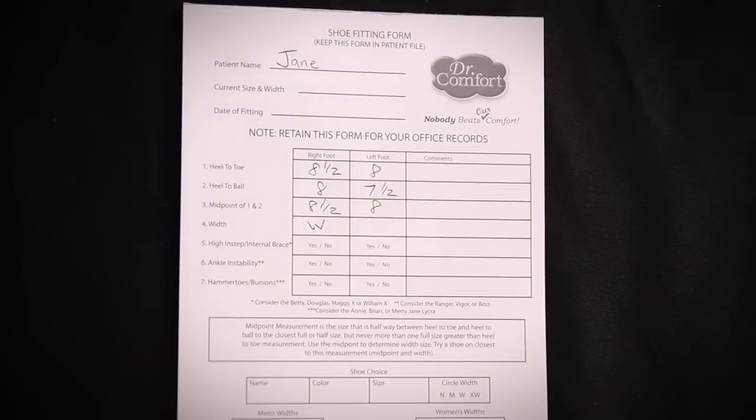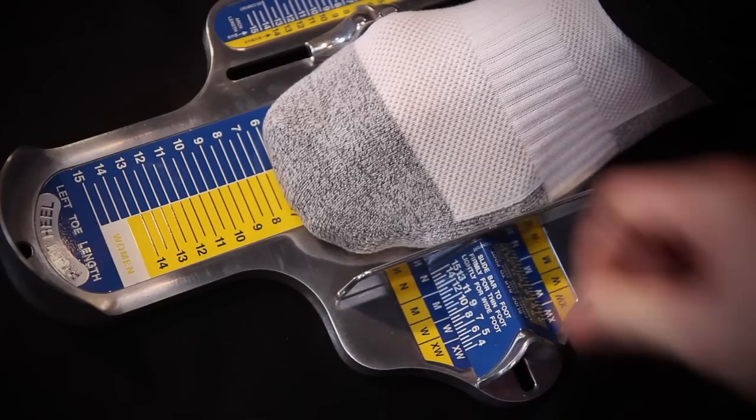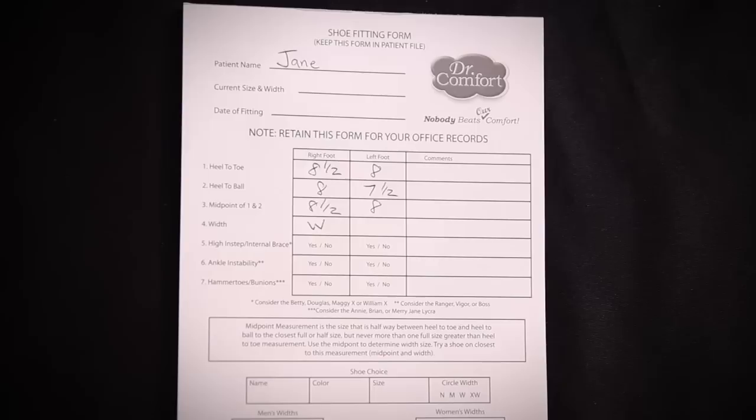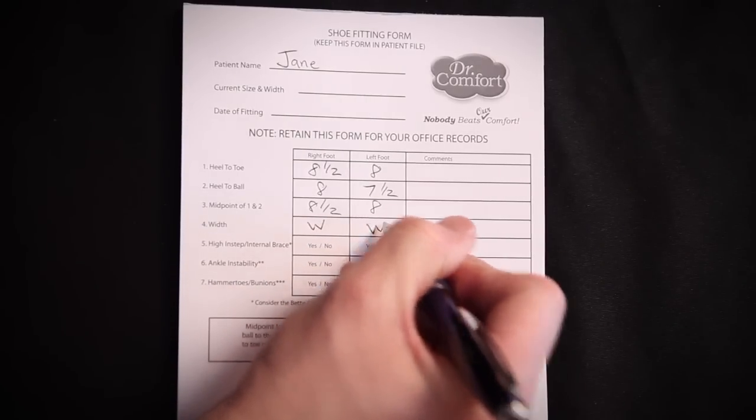You're taking eight and seven and a half and in this case, taking the larger of the two, which is size eight. Then I slide the sliding bar over to check the width of her foot and the eight also indicates she's a size wide.